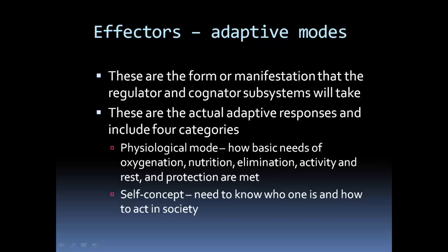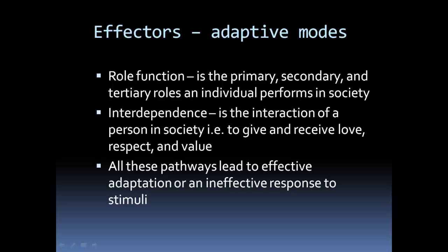The second adaptive mode is self-concept — the need to know who you are, how to act in society, and how one might see themselves. The third is role function, which can be primary, secondary, or tertiary, and is how an individual performs in society. For example, I'm a middle-aged male (primary), a father and husband (secondary), and a nurse (tertiary). The fourth is interdependence — the interaction of persons in society: family, friends, other people. An example might be: if I'm ill, who will be there to help me?